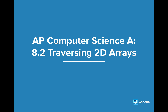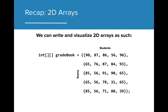Hi! In this lesson, we'll take a deeper look at traversing 2D arrays. In the last lesson, we learned that we can store arrays within other arrays. These 2D arrays can be written and visualized as a grid, where the rows of the grid represent the arrays stored within the 2D array, and each column represents an individual value stored within the 1D array which is stored in the 2D array.